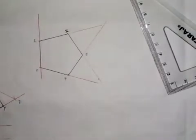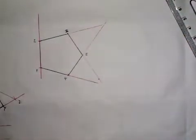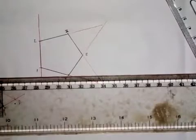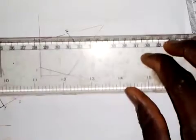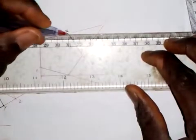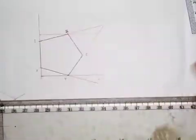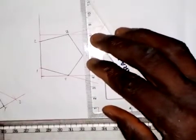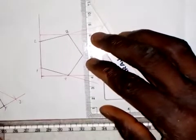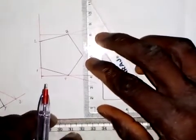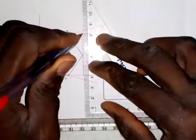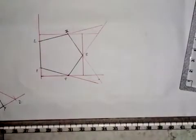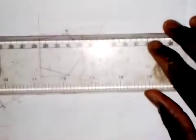The pentagon is complete. The next thing I'm going to do is draw from Point 4 a horizontal line, and from Point 3 I will also draw a horizontal line. Then I will draw a vertical line through Point 5 to touch this point, and also draw a vertical line through this area.